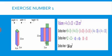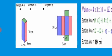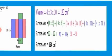Now we begin the exercises. Exercise number one. We have a rectangular prism where the length equals 4, the width equals 3, and the height equals 10. The prism is divided into three colors: purple, pink, and green. The volume equals 4 times 3 times 10. 4 times 3 is 12, times 10 equals 120.